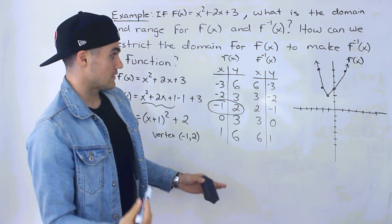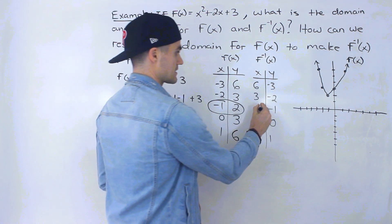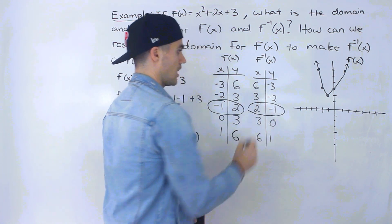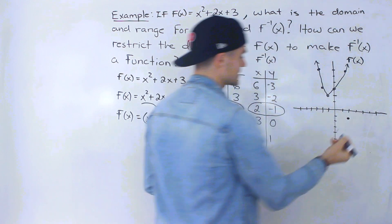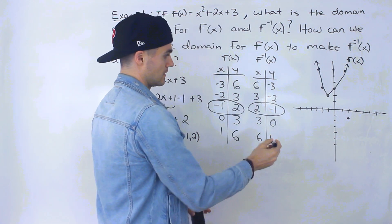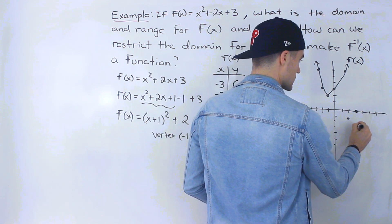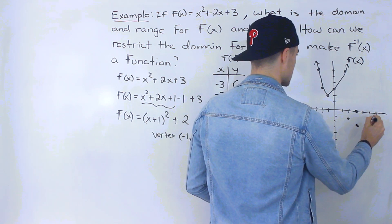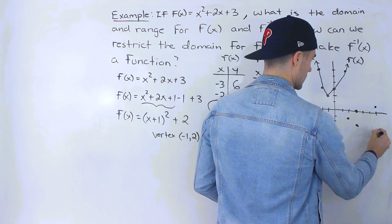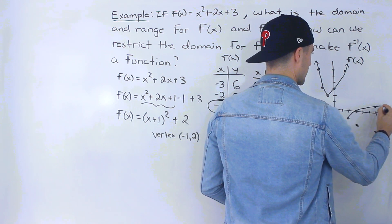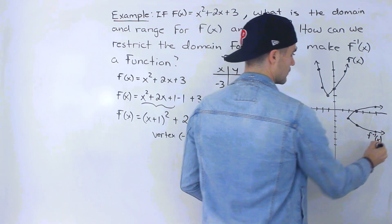Now let's graph the inverse. The vertex of the function was (−1, 2), so the vertex of the inverse is at (2, −1), which is down here. It's going to be a sideways parabola. Then we plot (3, 0), (3, −2), (6, 1), and (6, −3). That is the inverse, reflected over the line y = x.